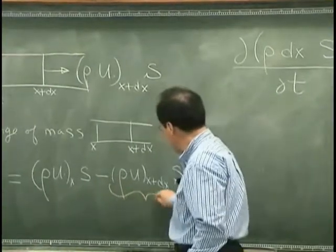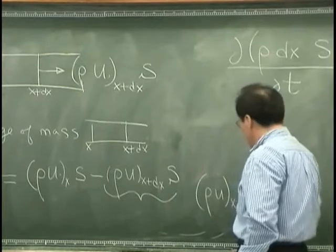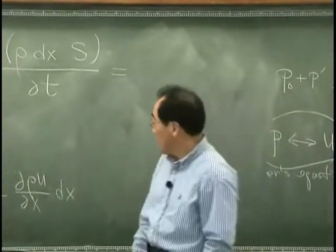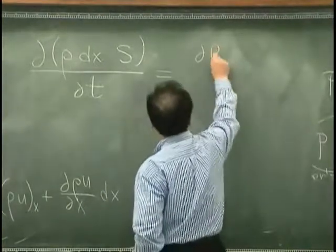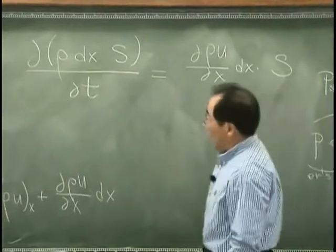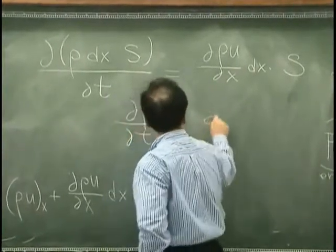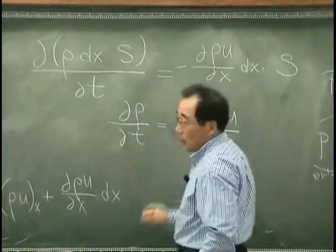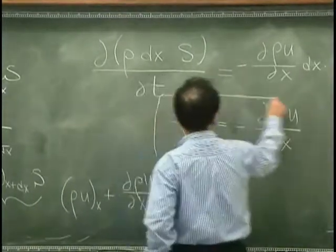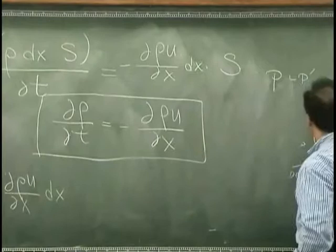And this is, what is this? This is rho u x plus d rho u dx dx. And then this has to be d rho u dx dx s. And we know that s is constant. Therefore, I can write d rho dt is equal to rho u dx minus minus. So this relates between rho density and velocity. So I have one more relation.